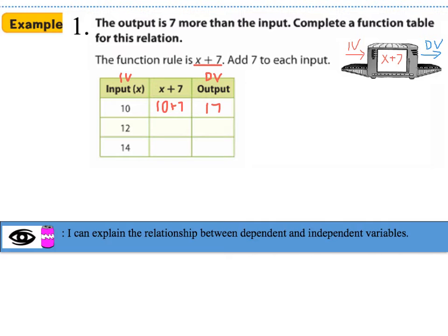So if I place 10 into the machine, the output number becomes 17. Let's take the input number 12, put it into the machine, and add 7 to it. The output number becomes 19. Notice the output number 19 is depending on the number 12. Then I'm going to take the number 14 as the input, place it into the machine, add 7 to that, and the output number becomes 21. Notice the output number 21 depended on the 14.